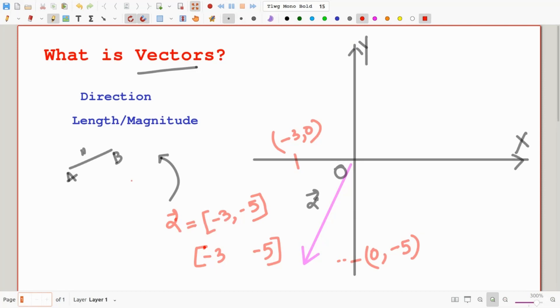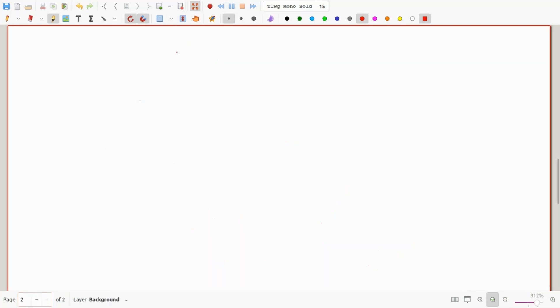Apart from that, this can also be written as a column format, and it's exactly the same information carrying, but it is just vertical now. Again, this is still the x component and this one is still the y component.